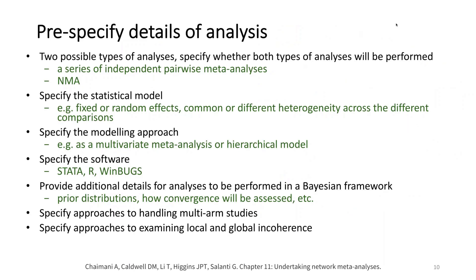The second major issue beyond the PICO is really about the analysis, which is quite different from pairwise meta-analysis. I would strongly recommend that you involve a statistician who has experience in network meta-analysis in drafting this section of the protocol. Think about the statistical model you're going to use, the modeling approach, the software, the approaches to handling multi-arm studies, the approaches to examining local and global incoherence — which is the statistical term for intransitivity.